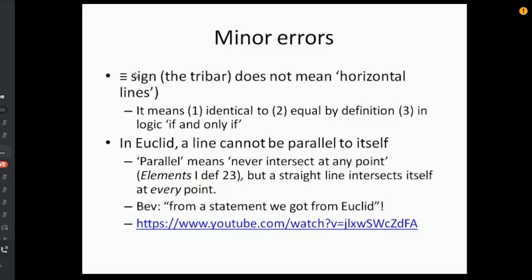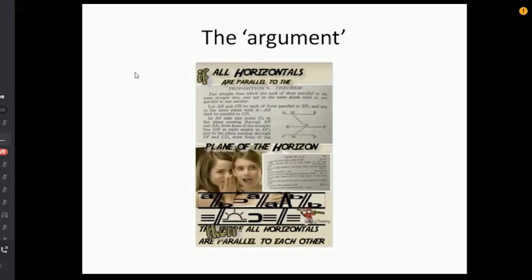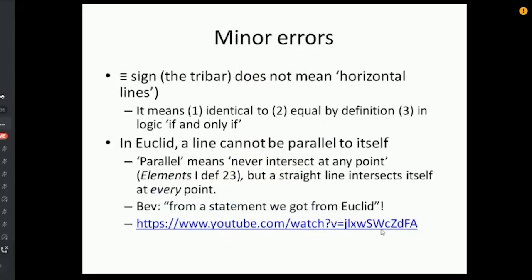Right, there are some minor errors, not serious errors, but there are some minor errors in what he's got there. So first of all, a tri-bar sign, which is the three horizontal parallel lines, actually does not mean horizontal lines, although he says it does. You see that picture one up from the bottom, that does not mean horizontal lines, it's actually in logic, it means if and only if, so p if and only if q, or in mathematics it sometimes means identical to, or sometimes means equal by definition.